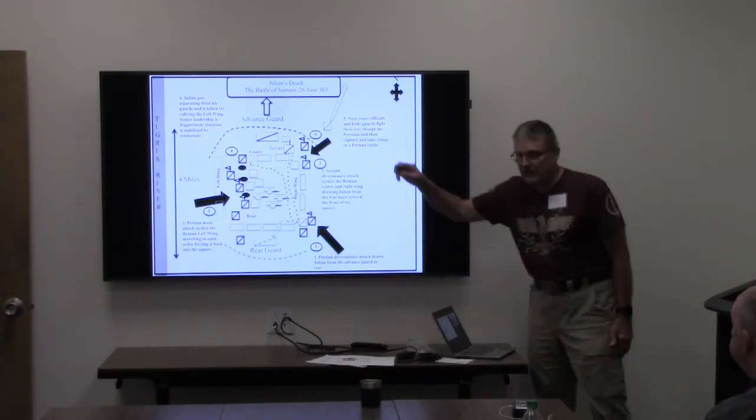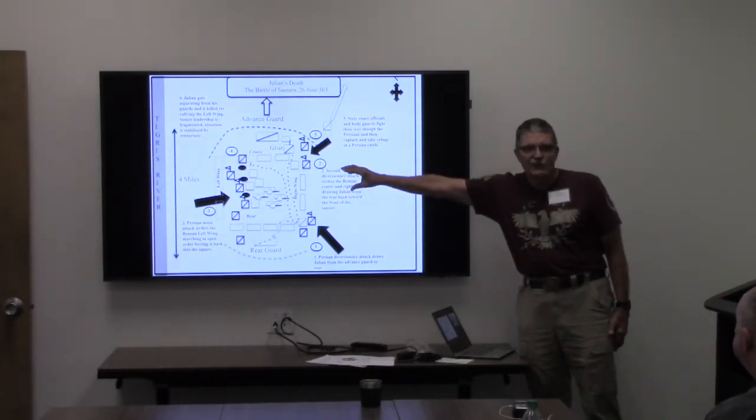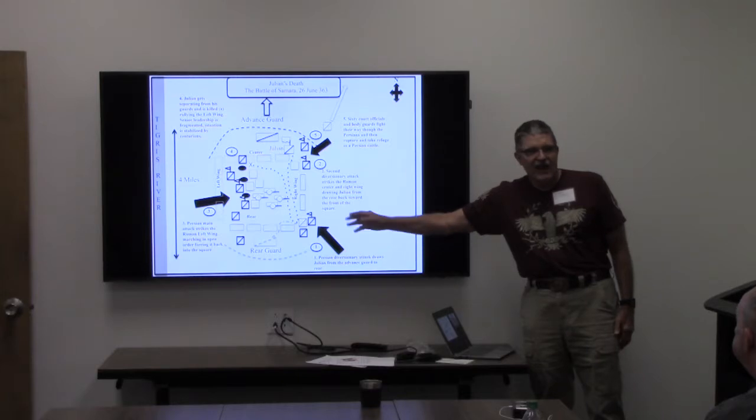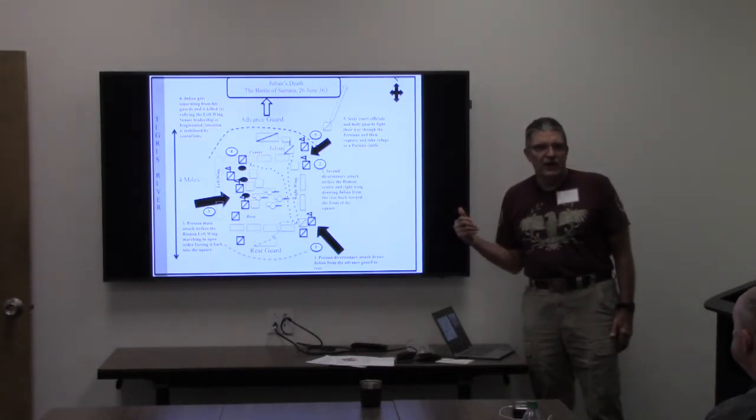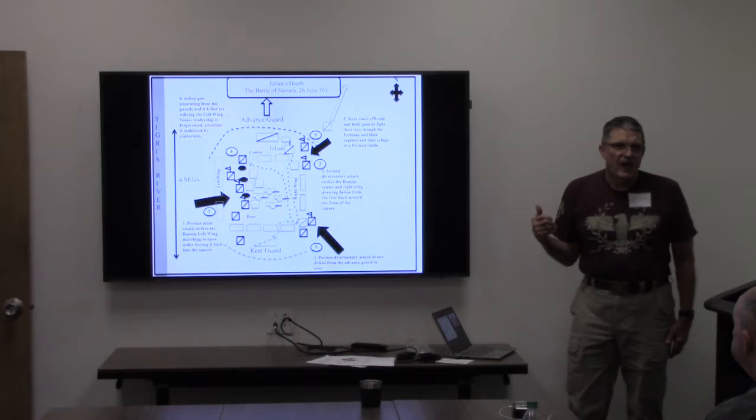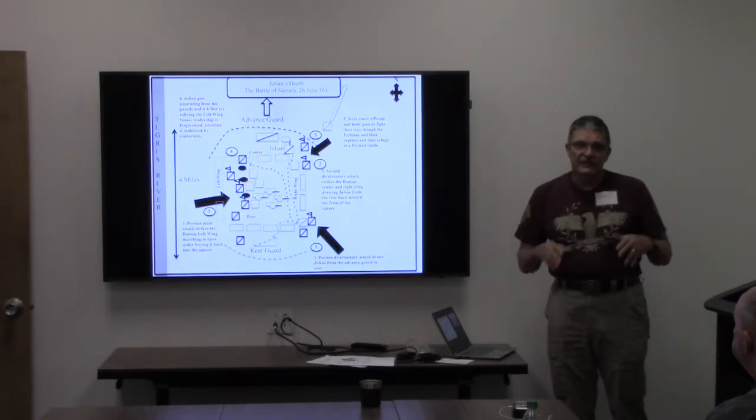And so what happens is Julian with the heavy cavalry has to ride two miles back, fight the breach, reform the square while everything is continuing to move. So this happens for a couple days.